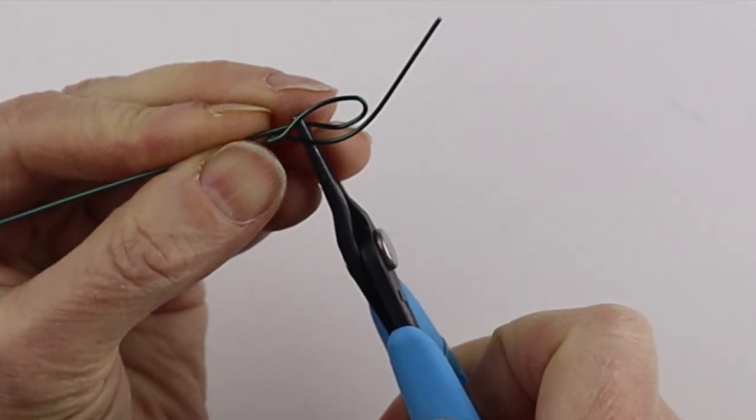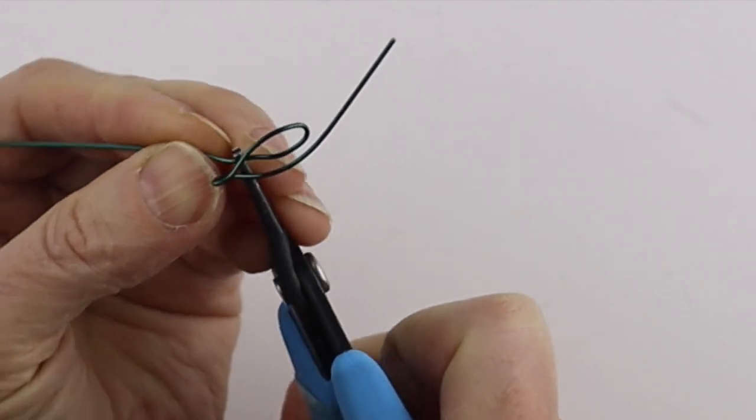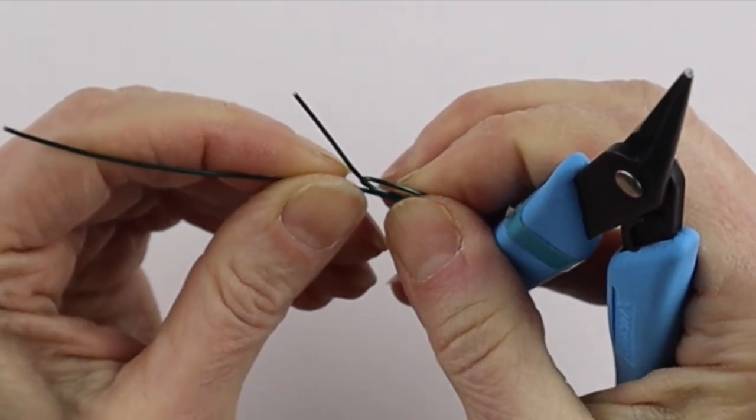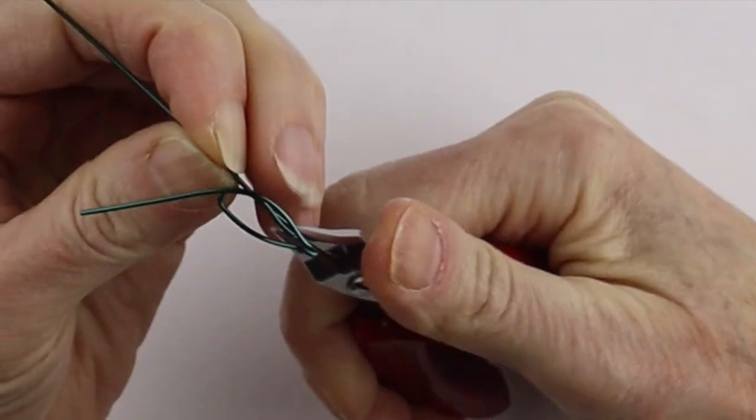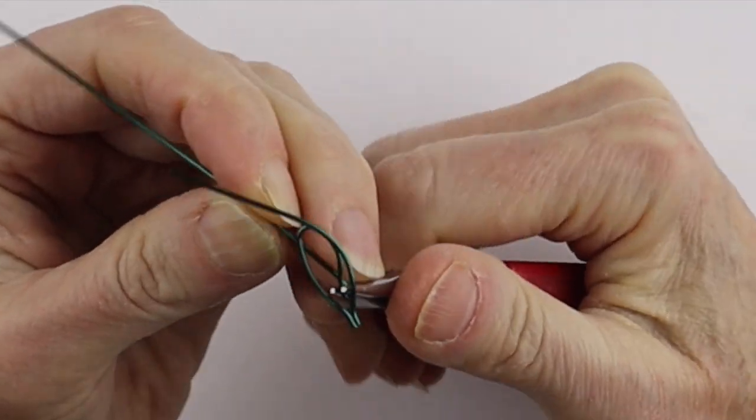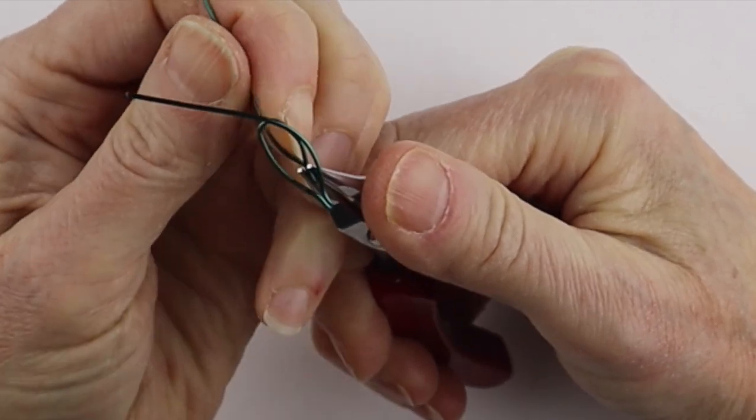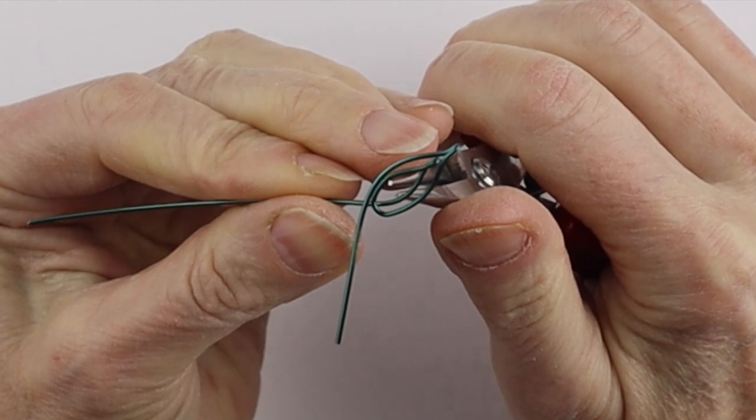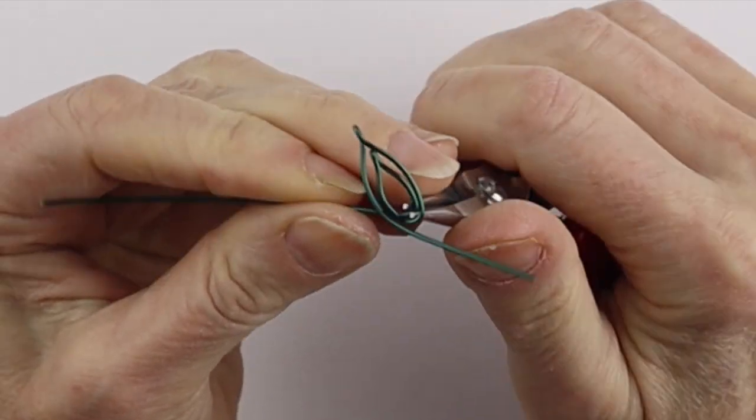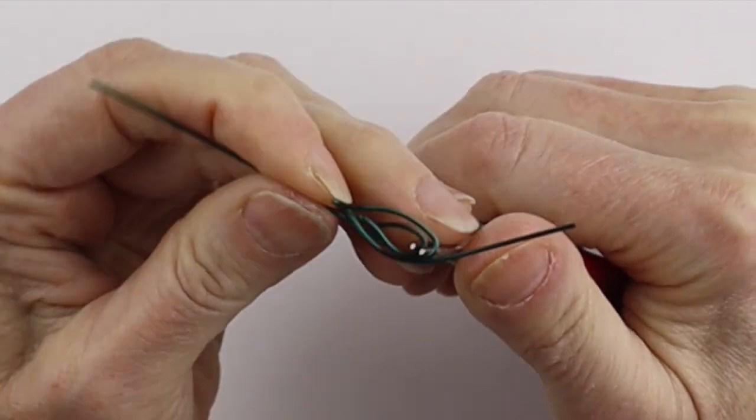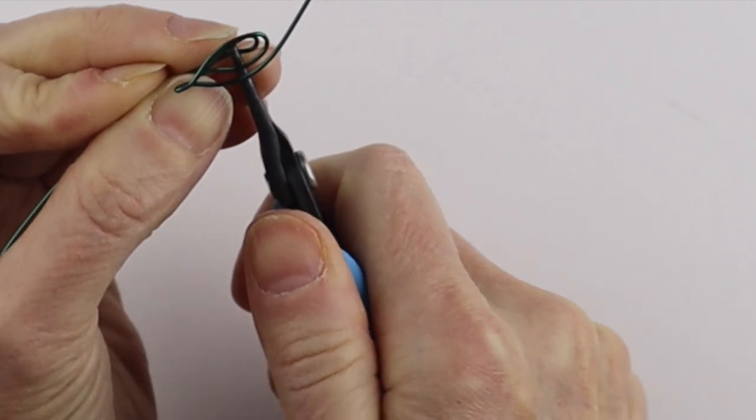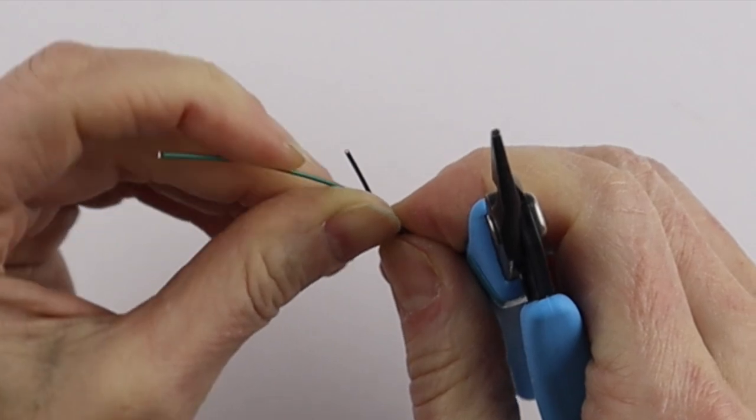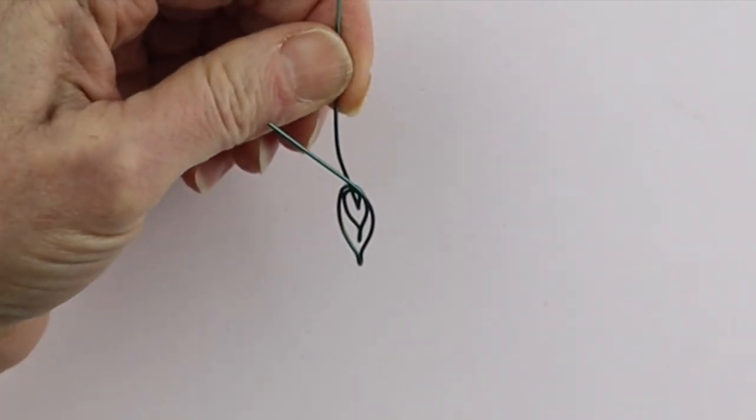Grab it with the flat pliers and push it so it makes a sharp bend. Again with the round pliers, bring it out and around. You can do just two, or if you want to do three, bring it down. Take it with the flat pliers again and push it straight up. So we have the leaf.